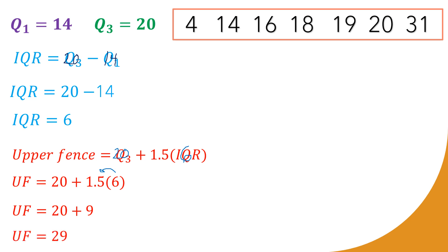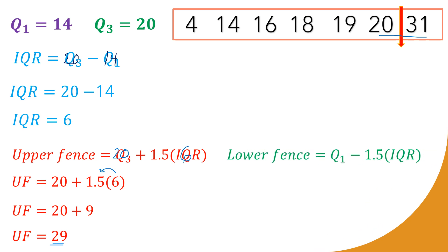Therefore, our upper fence is at 29, which is in between 20 and 31 on our data set, so the upper fence is placed there. Next, we set up the lower fence: lower fence = Q1 − 1.5 × IQR = 14 − 1.5 × 6. Multiplying 6 by 1.5 gives us 9.